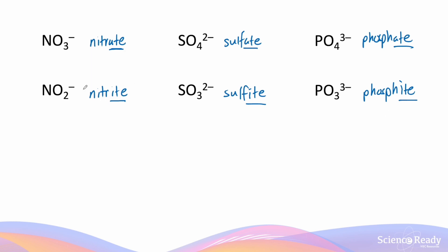Despite the different number of oxygens, the charge in each pair of polyatomic ions remains the same. Nitrate and nitrite both have an overall charge of negative one. Sulfate and sulfite both have a charge of two minus. Phosphate and phosphite both have an overall charge of three minus. Knowing the names, exact molecular formulas, and charges of these ions is quite important, especially nitrates, sulfates, and phosphates.